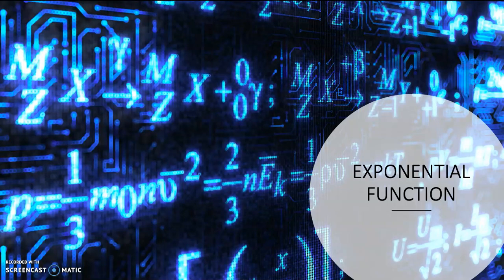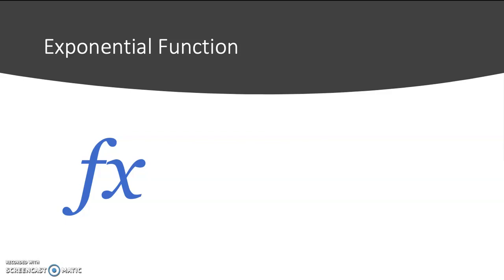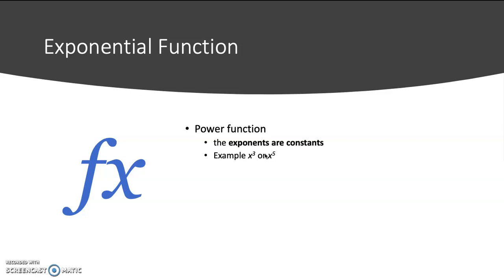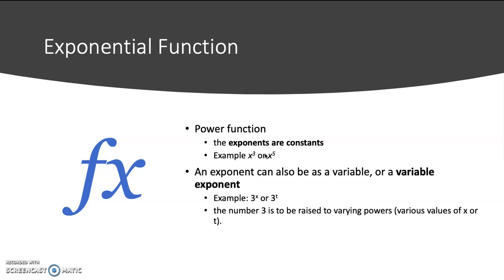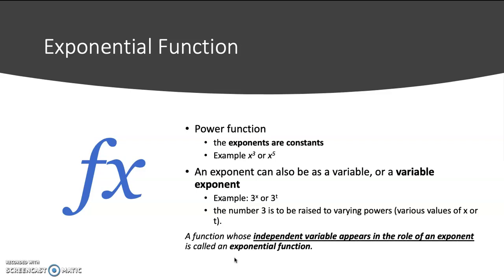Let's start with exponential function. Remember from the previous video, if f(x) is a power function, x is raised to a constant number, or the exponents are constant. Example: x to the power of 3, or x to the power of 5. An exponent can also be a variable, or said to be a variable exponent. Example: 3 to the power of x, or 3 to the power of t. The number 3 is raised to varying powers, various values of x or t. A function whose independent variable appears in the role of an exponent is called an exponential function.